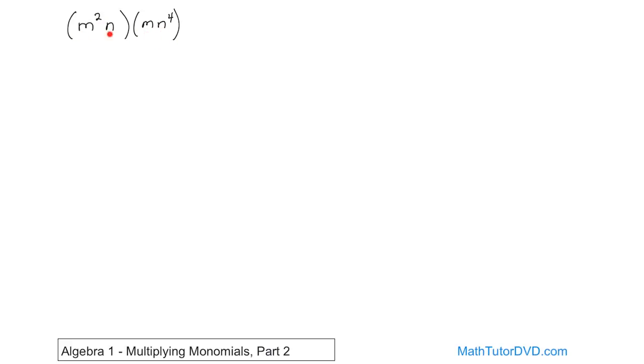Since everything's multiplied together, we look for the same base, and then we add the exponents. We have an m here and an m here. There's a first power, so we can add those together: m cubed. Then we have an n here and an n to the fourth. The bases are the same, so we add them together. One plus four is five, n to the fifth power. So the answer is m cubed n to the fifth power.